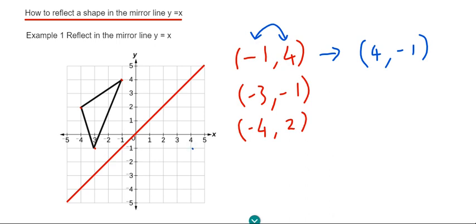Okay, our next corner, if we swap the coordinates around, we'll get minus 1, minus 3. This is down here.